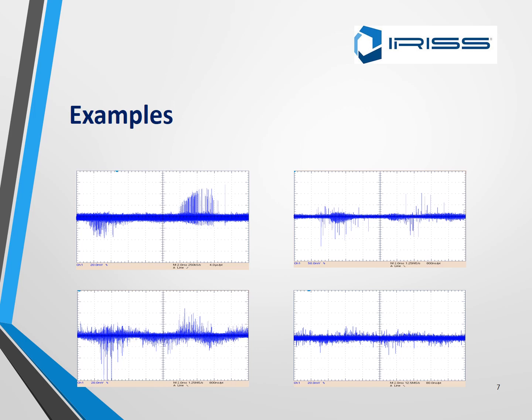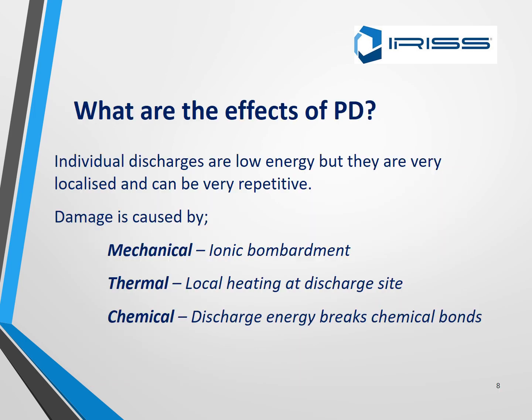What are the effects of PD? The individual discharges are low energy but they are very localized and can be very repetitive. Damage is caused mechanically via ionic bombardment, thermally through local heating at a discharge site, and chemically where discharge energy breaks down chemical bonds. Corona or PD is very destructive.